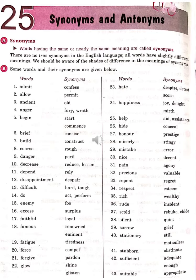Admit – Confess. Ancient – Old (Prachin). Anger – Fury, Wrath. Begin – Start, Commence. Brief – Concise. Build – Construct.